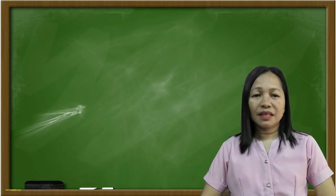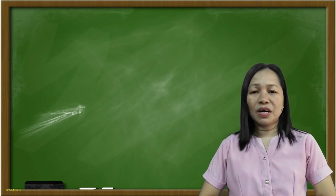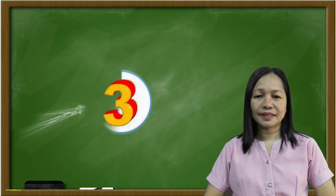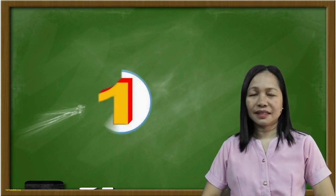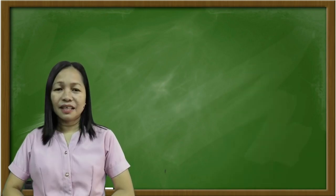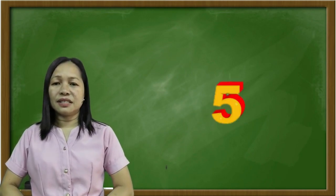Number two, this focuses the image seen at close or far ranges. What is the correct answer? The answer is letter D. Lens. Number three, this allows photography in low light conditions.